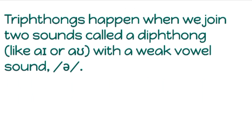A Triphthong happens when we join two sounds called a diphthong, like 'I' or 'OE', with a weak vowel — schwa. So when schwa is combined with any diphthong, the combination becomes a Triphthong.